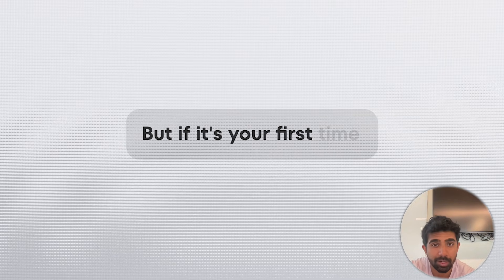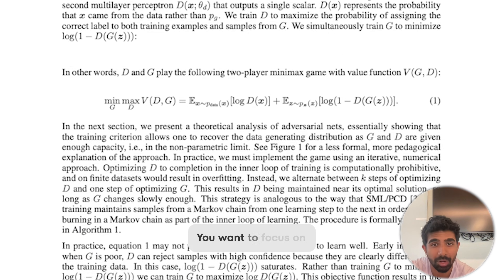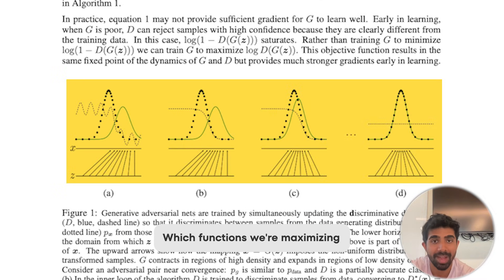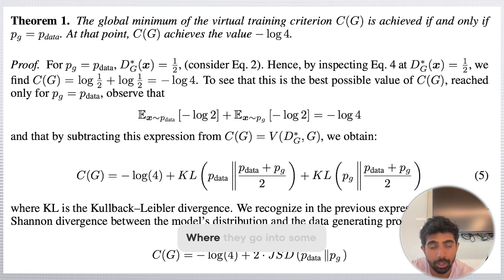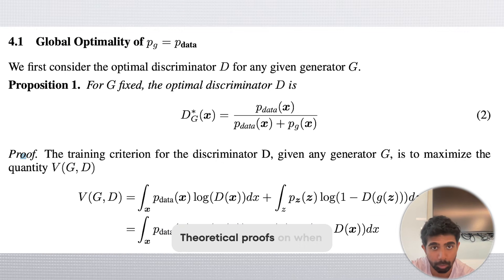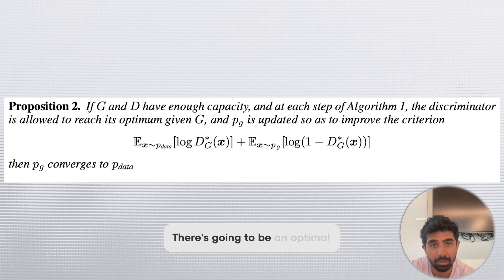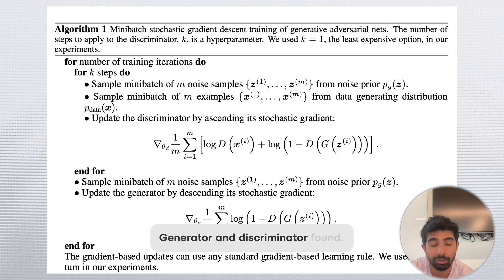And of course, a math background, as for all the deep learning papers, is important. But if it's your first time reading this paper, just focus on this section over here. You want to focus on which functions we're maximizing and which functions we're minimizing during the training process. There are some other sections where they go into some theoretical proofs on when there's going to be an optimal generator and discriminator found.